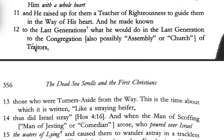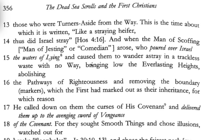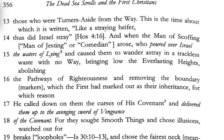To be a traitor you have to begin with someone and then turn away from them, so there were people who were members of the assembly who turned aside from following the way. 'This is the time about which it is written: like a straying heifer, thus did Israel stray. And when the man of scoffing arose — who poured over Israel the waters of lying and caused them to wander astray in a trackless waste — bringing low the everlasting heights, abolishing the pathways of righteousness, and removing the boundary markers which the first had marked out as their inheritance.'